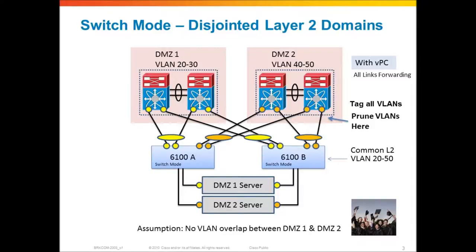You could potentially leverage VPC on the upstream domains to get all links forwarding for all VLANs and have all paths available. Ultimately, what you achieve is a common layer 2 domain with a layer 2 switch connected to both networks, by converting the fabric interconnect to switch mode. There is no concept of a broadcast listener link that would create problems with servers seeing or not seeing broadcasts.